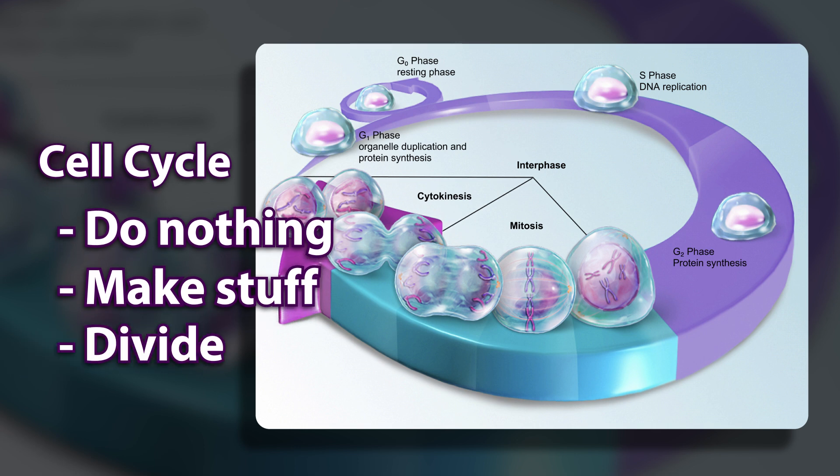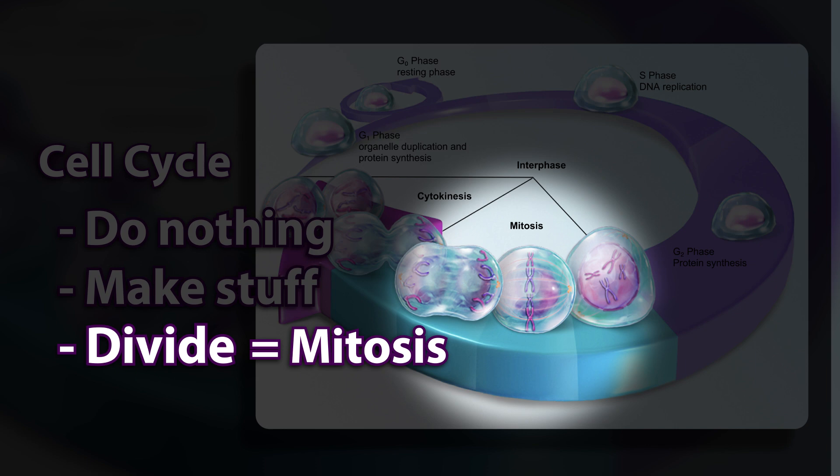The most famous of those phases is that of division, which is called mitosis. At the end of mitosis, we have two identical cells. This means the cell needs to make a second copy of everything so that it can put those copies into the new cell. Before we get into mitosis, let's look at the other phases of the cell cycle — just because they're not as famous doesn't mean they're not as important.